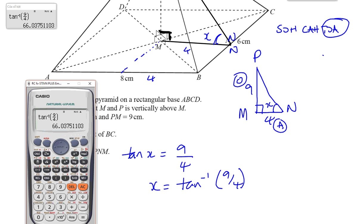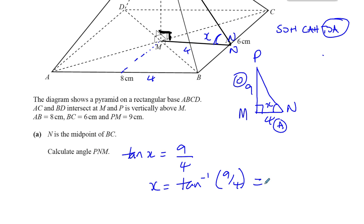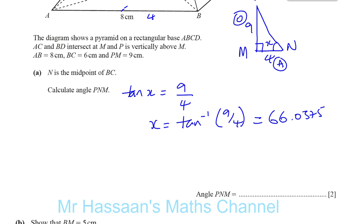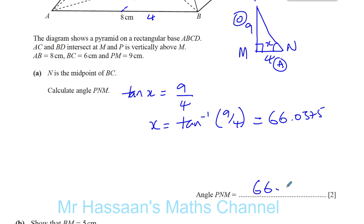It's in degree mode. Yes. 66.0375. So angles should be given to one decimal place unless otherwise stated. It doesn't say anything else, so 66.0 degrees. You should write .0 even though you normally wouldn't write .0. You write it here because it's an angle that's not exact and it's rounded to one decimal place. So you should give your answer to one decimal place for angles.